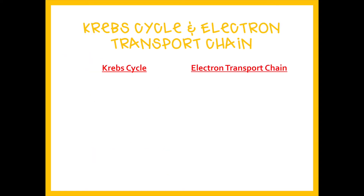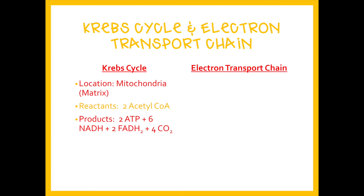If oxygen was present, we would move on to the Krebs cycle. The Krebs cycle takes place in the mitochondria, specifically in the matrix. You start off with two acetyl-CoAs. The products are two more ATP — so in glycolysis we made two and now in Krebs cycle we're making two more. We're also making some NADHs and FADH₂s, which are electron carriers needed for the electron transport chain. In the Krebs cycle you also release carbon dioxide.